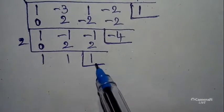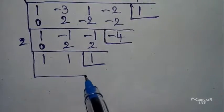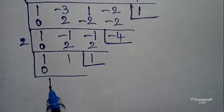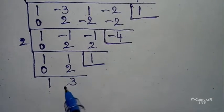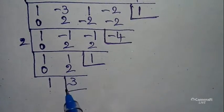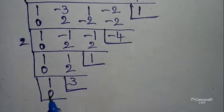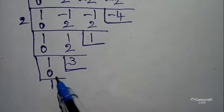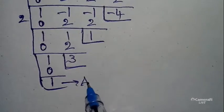Take another box and write 0 here. 1 + 0 = 1. Cross multiply: 2 × 2. Next addition: 1 + 2 = 3. Keep this. Then take one more box and write 0. 1 + 0 = 1. There is no value to multiply, so keep this.